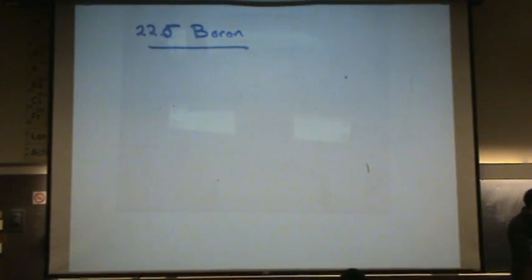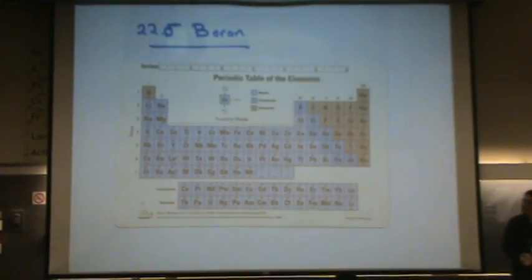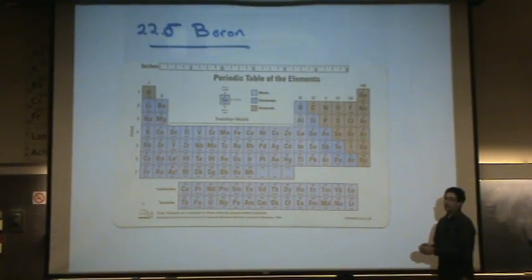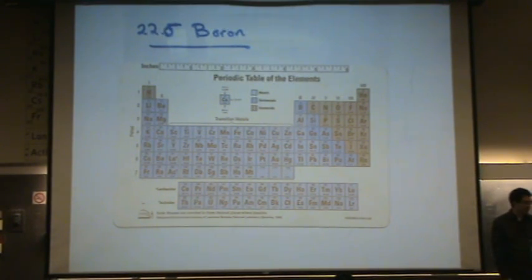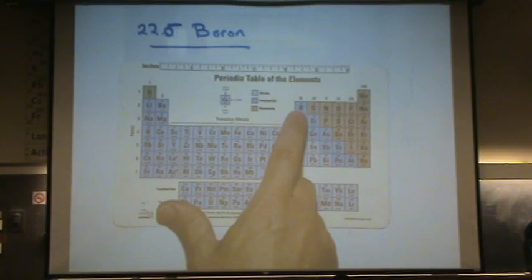Boron is actually a pretty funny semi-metal. It is one of the semi-metals that is exactly in the middle. Sometimes you'll see boron listed as a non-metal and sometimes as a semi-metal. It's exactly in the middle of the whole process. So different books will list it differently.